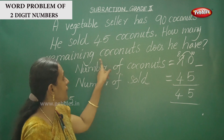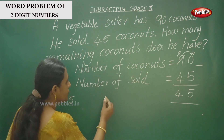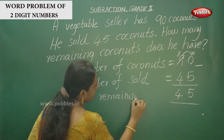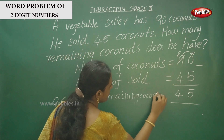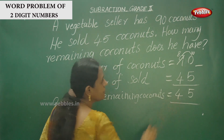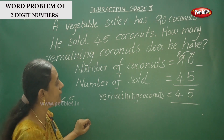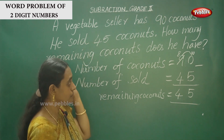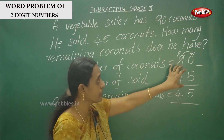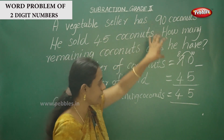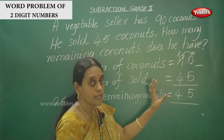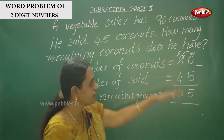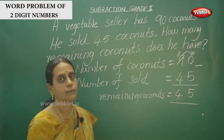So the answer is 45, and the remaining coconuts he has are 45. This is the way to write down the statement from a story question. Make sure you put the correct numbers: number of coconuts is 90, number sold is 45. Find the word 'remaining' and use subtraction to find the answer.